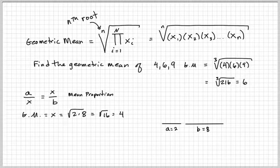The index is 2, square root of two values. So 2 times 8 is 16. The square root of 16 is 4. This 4 can be represented like this.